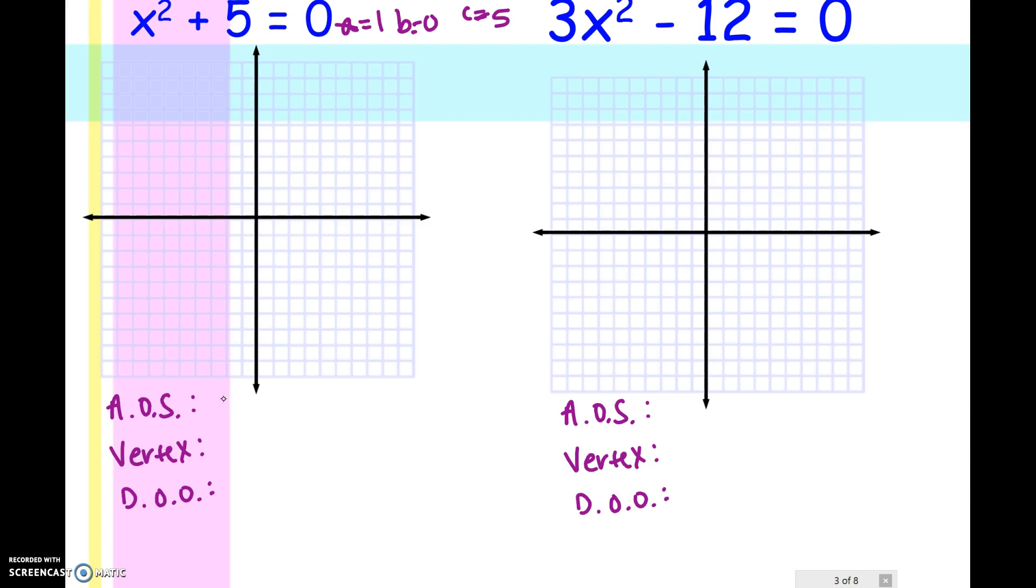Here our A is 1, our B is 0, and our C is 5. So when we go to find our axis of symmetry and we plug in our B and our A, we have 0 over 2 times 1, or x equals 0. So whenever you're missing your B, your axis of symmetry is going to end up being x equals 0, because when you have B on the top of the fraction, it's always going to end up being 0. We know our axis of symmetry is x equals 0, and we're going to draw our axis of symmetry in here.